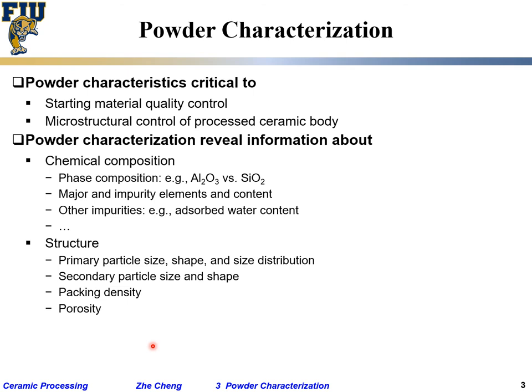We also consider packing density — how densely or loosely the powders are packed together — and porosity, meaning how many pores exist within the system. If we want uniform, high packing, we probably don't want too high porosity. On the other hand, for porous materials in catalysis applications, high porosity is desirable. Finally, specific surface area is related to particle size and also to features such as sinterability or catalyst activity.